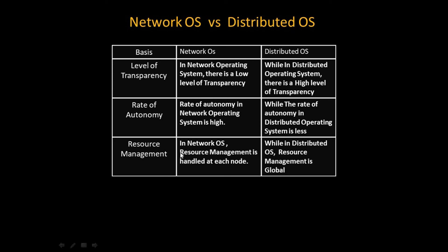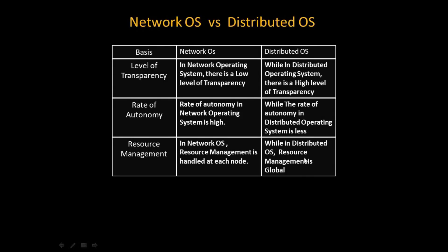Finally, on the basis of resource management: in a network operating system, resource management is handled at each node since the nodes are separate. In a distributed operating system, resource management is global, since they all share the same hardware resource. That's the end — thank you very much for watching, and I'll see you in the next video.